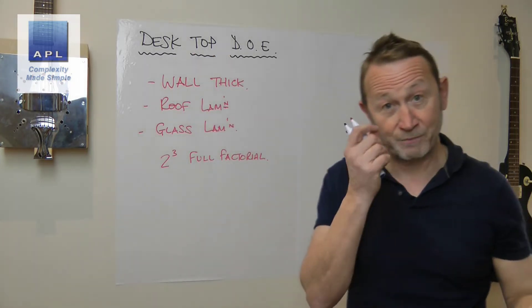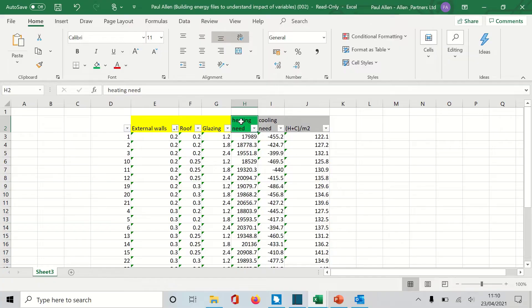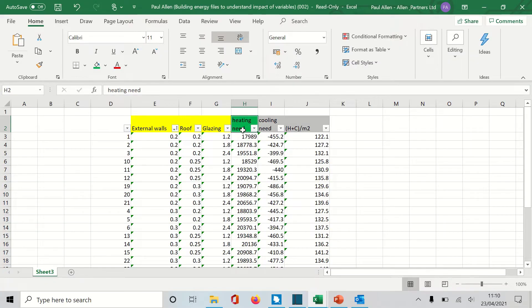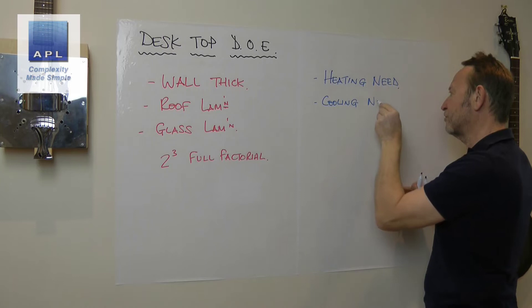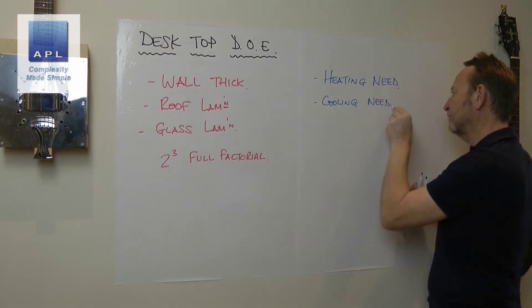And then the measurements: the heating need, the cooling need. So there's a couple of outputs. I'm just going to keep it to two. There's one that says heating need, there's one that says cooling need.